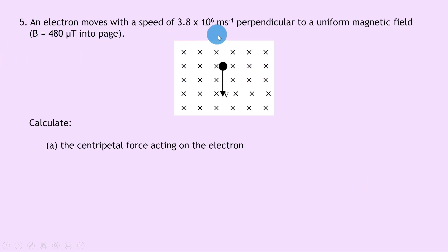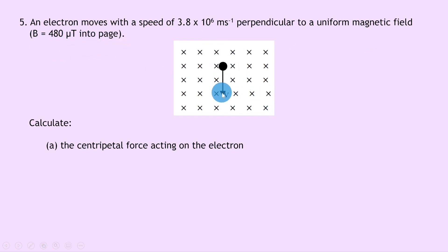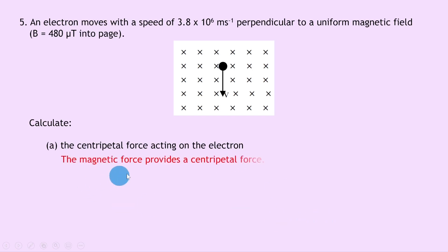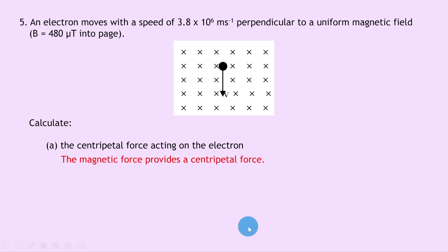Question five: an electron moves with a speed of 3.8 times 10 to the 6 meters per second perpendicular to a uniform magnetic field of magnetic induction 480 microtesla into the page, shown by crosses. The electron moves downward. Calculate the centripetal force. Remember the magnetic force provides the centripetal force here, so we can simply calculate the magnetic force using f equals qvb.